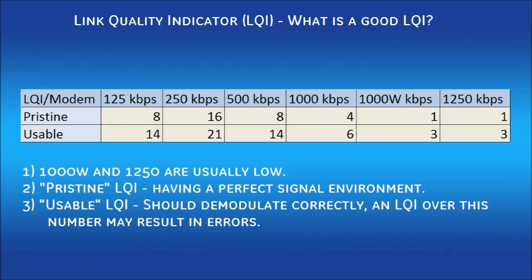How should you read this table? First off, the LQI on modems 1000W and 1250 are usually low. If you see an LQI value, then a signal is present. Due to the receiver's wide bandwidth in 1000, 1000W, and 1250 modems, the dynamic range is lower, which typically resolves in a low LQI.